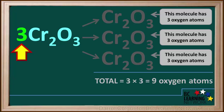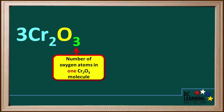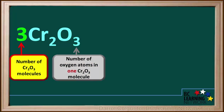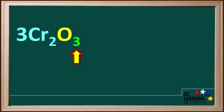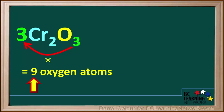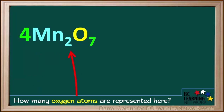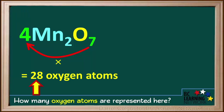Now we'll show you a quicker way to do this. Because the subscript to the right of the oxygen tells us the number of oxygen atoms in one molecule of Cr2O3, and the coefficient tells us the total number of Cr2O3 molecules present, to find the total number of oxygen atoms present, we take the subscript 3 and multiply it by the coefficient 3, which is equal to nine oxygen atoms in total. For example, we're asked how many oxygen atoms are represented by 4MnO7. We take the subscript 7 and multiply it by the coefficient 4. Seven times four equals 28, so 28 oxygen atoms are represented here.